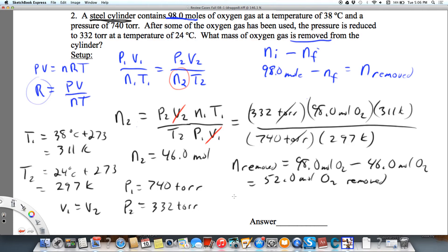If I take 52.0 moles of O2 and multiply by the molar mass, which is 32.00 grams of O2 per one mole of O2, I get 1664 grams of O2. With three sig figs, that's 1.67 times 10 to the third grams of O2 that were removed from the tank.